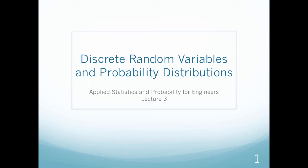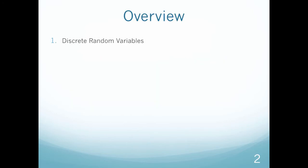Welcome to our lecture on Chapter 3 in Applied Statistics and Probability for Engineers. This chapter we're going to be talking about discrete random variables and probability distributions.